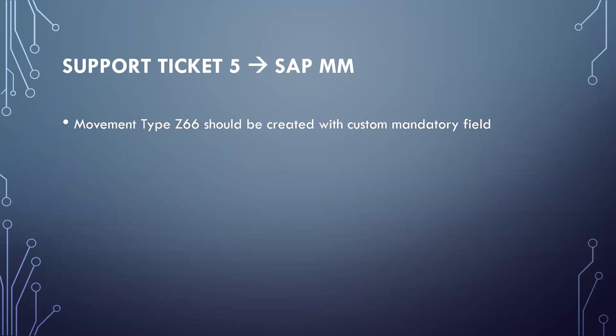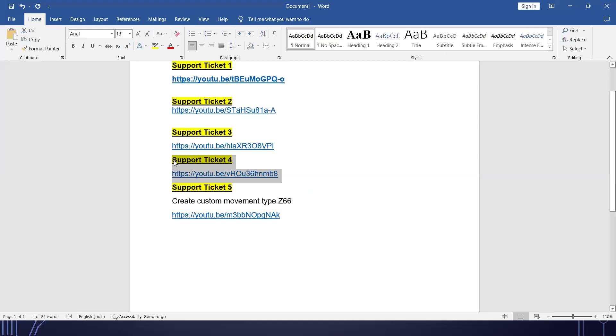The fifth and final ticket is SAP MM. A PO document type Z (double string) should be created with customized mandatory fields. We made the required fields mandatory — they have provided all the fields which are to be set as mandatory, and that video has already been uploaded.